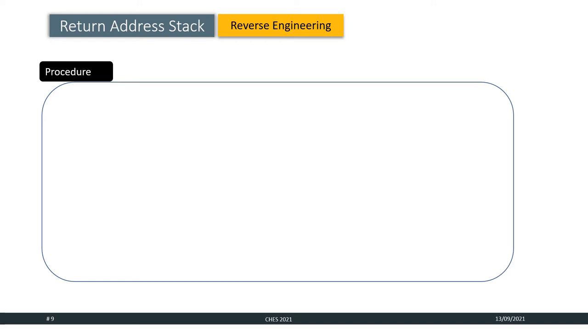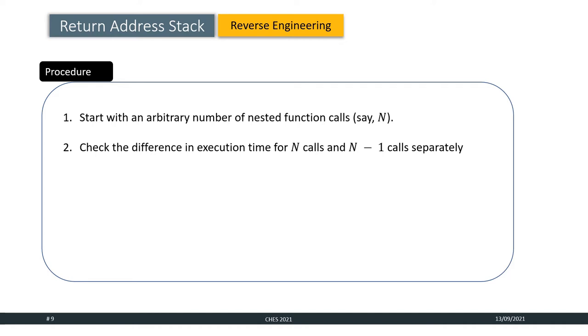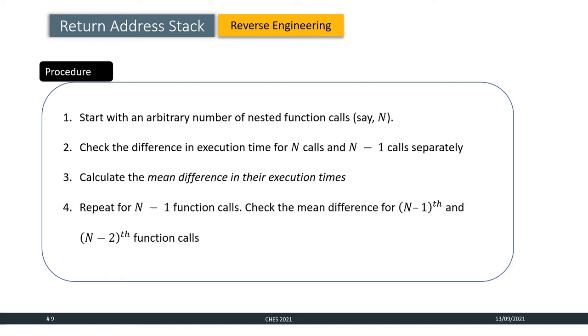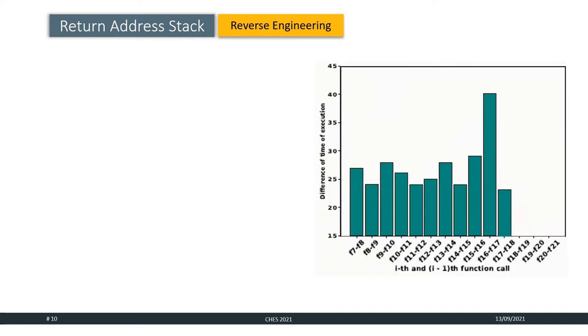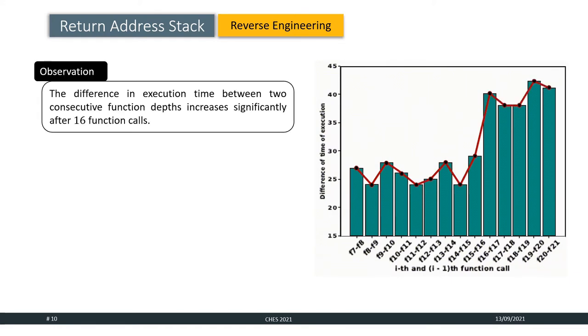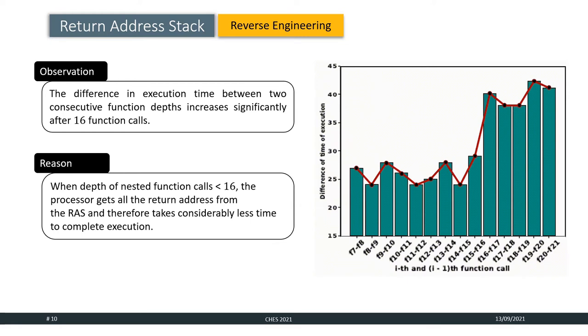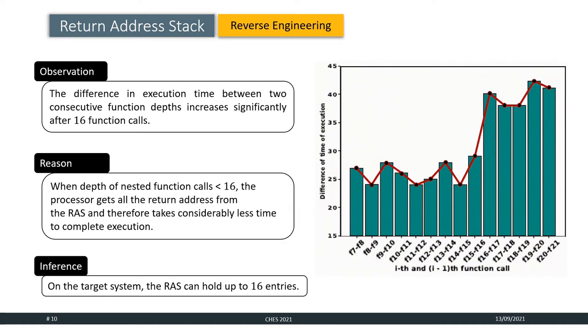We start with n nested function calls and check the difference in execution time for n calls and n-1 calls separately. In order to account for the system noise, we perform this operation multiple times and calculate the mean difference for their execution times. Then, we repeat it for function depths n-1 and check the mean difference for n-1th and n-2th function calls. We reduce the function depth by 1 every time and keep a log of the difference in their execution time. This flow shows the difference of execution time for consecutive function call depths. We can observe that the difference in execution time between two consecutive function depths increases significantly after 16 function calls. The reason behind that is when depth of nested function calls is less than 16, the processor gets all return addresses from the RAS and therefore takes considerably less time to complete the execution. So, we can conclude that on our target system that we did this experiment on, the RAS can hold up to 16 entries.